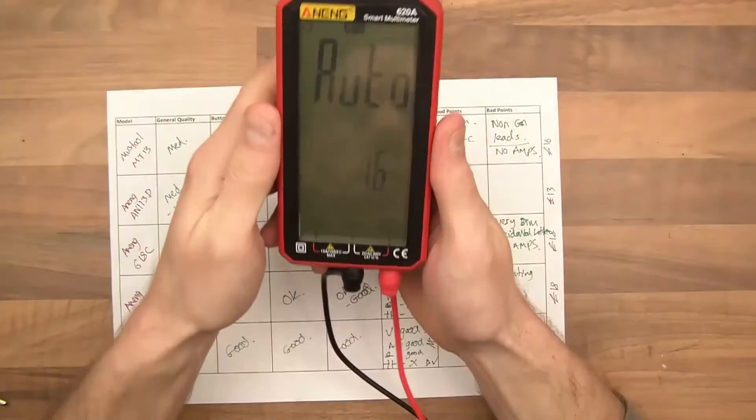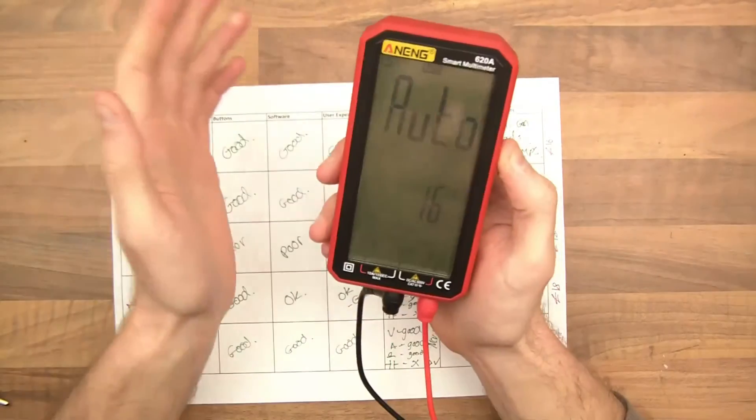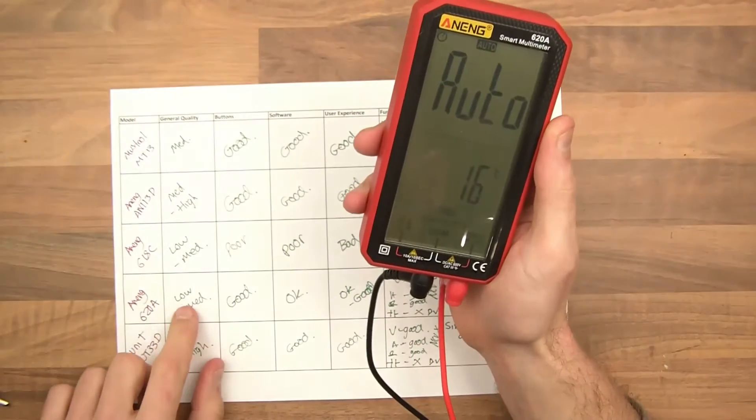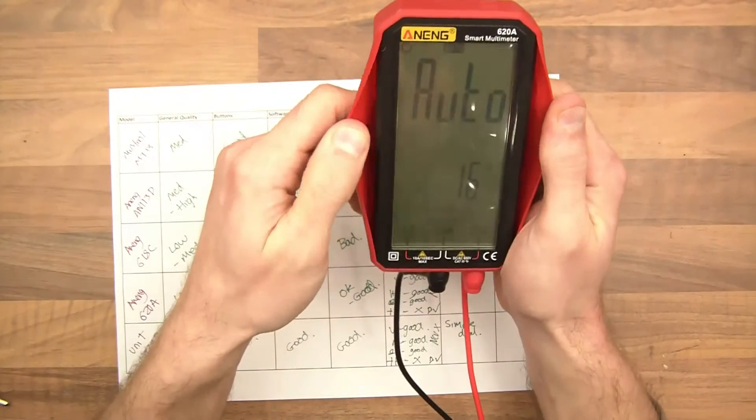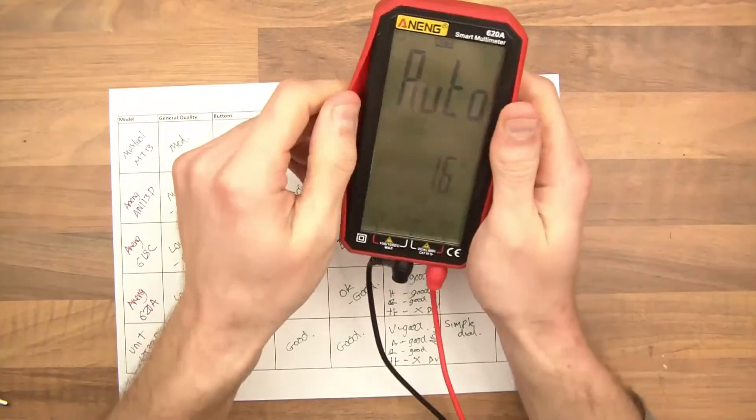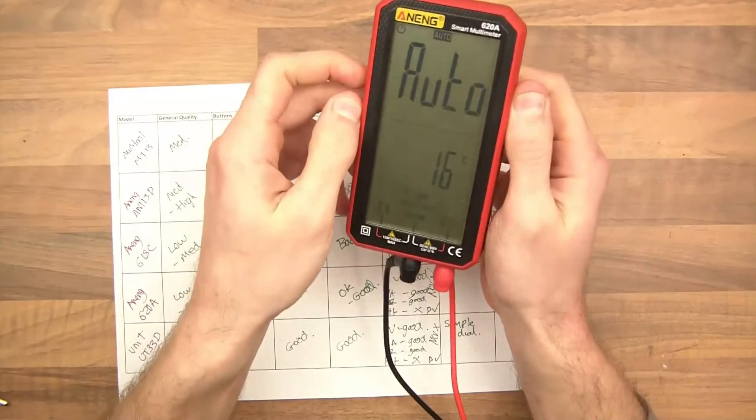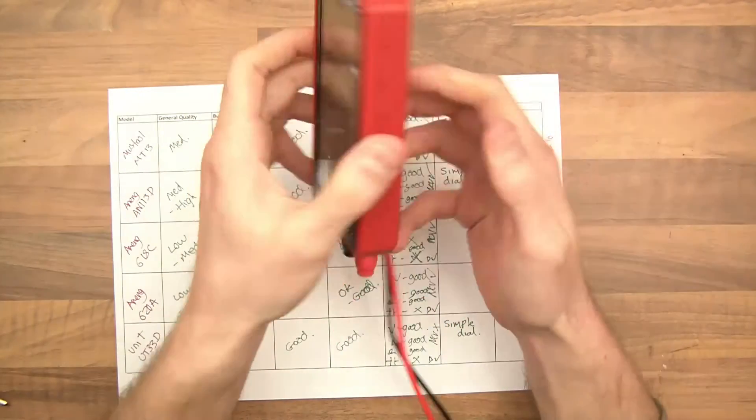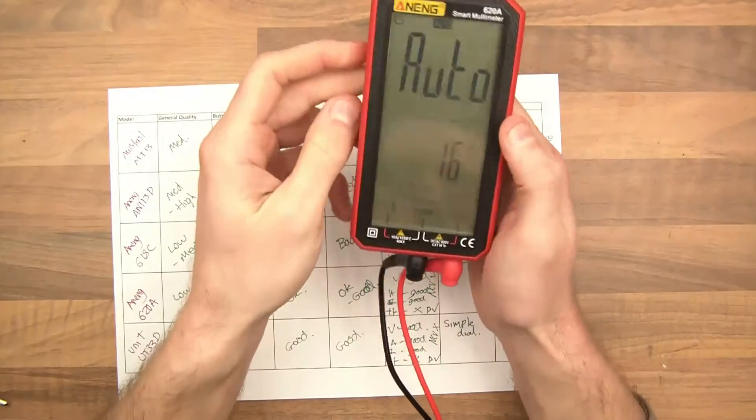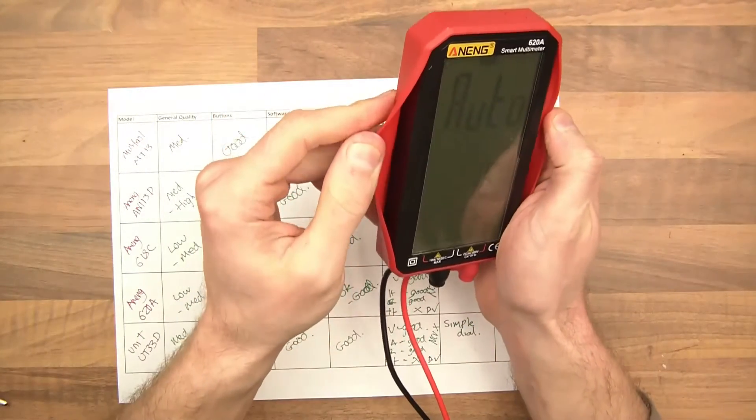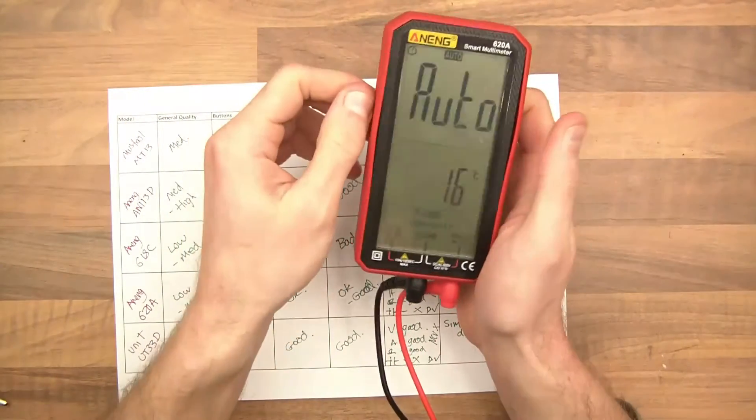The next one is this one. This is Anang 620A. And this one's okay. I've written there the build quality is low to medium. I would say it's actually more medium. It's not terrible build quality. This thing here doesn't really do anything. It's hard. It's not a soft rubber thing. It'll probably stop it from getting scratched, which I don't know if it's really worth it. You don't really worry about your multimeter getting scratched. You care more about getting smashed by dropping it, which this isn't going to offer any protection like that.